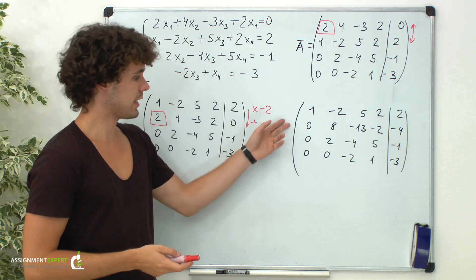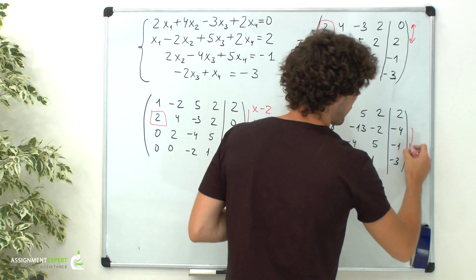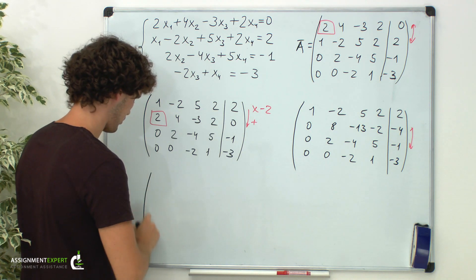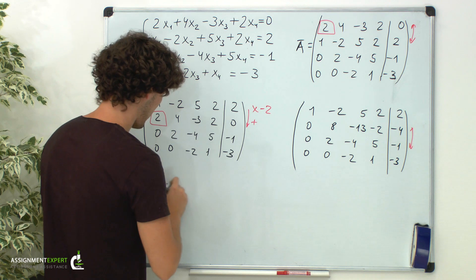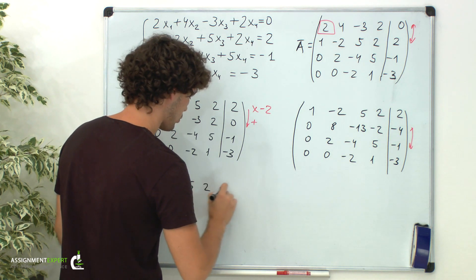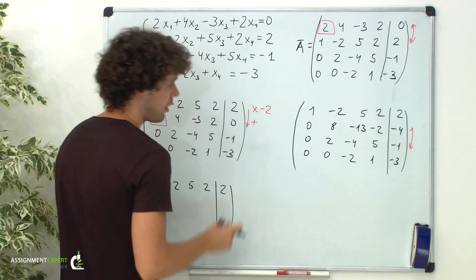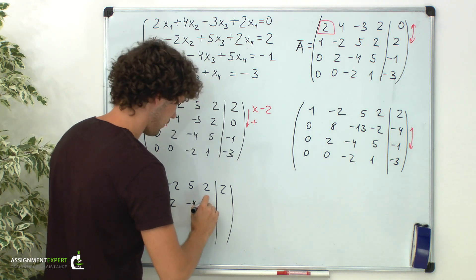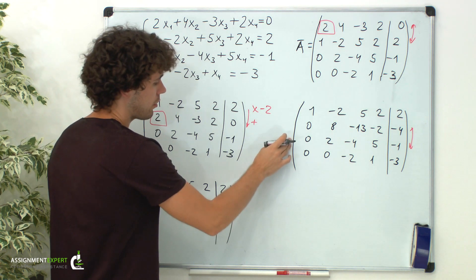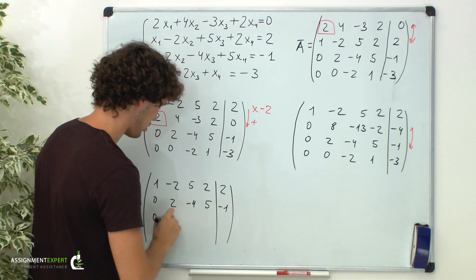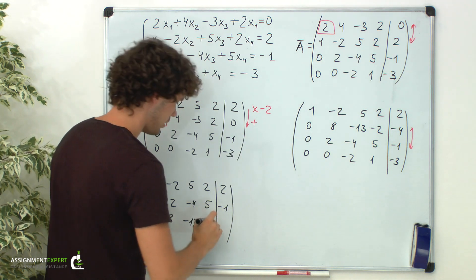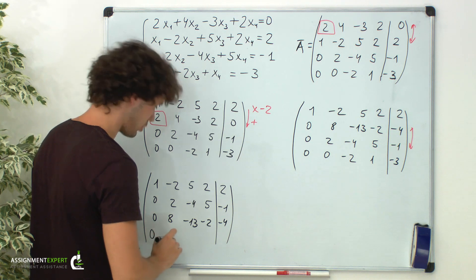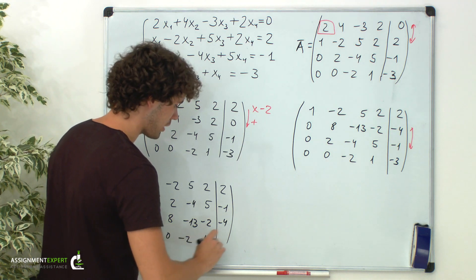Now let's swap the second and the third rows. In the first row we have 1, negative 2, 5, 2, 2. In the second row now we have 0, 2, negative 4, 5, negative 1. And in the third row we have 0, 8, negative 13, negative 2, and negative 4. The last row remains the same: 0, 0, negative 2, 1, negative 3.